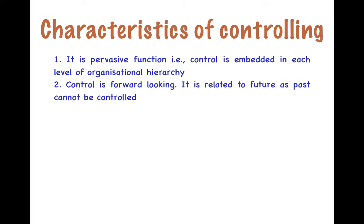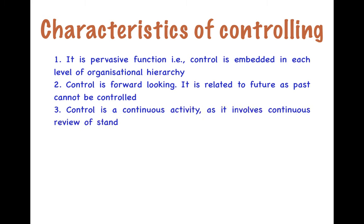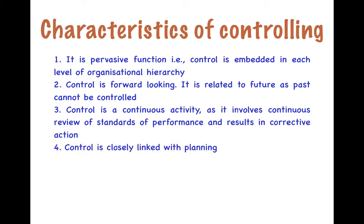Secondly, control is forward-looking, meaning it is related to the future, because the past cannot be controlled. Thirdly, control is a continuous activity — you can't do it once or twice; it has to be done all the time. It involves continuous review of standards of performance and results in corrective action. Control is also closely linked to planning, because without control all planning will fail.